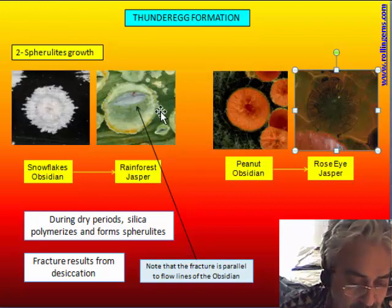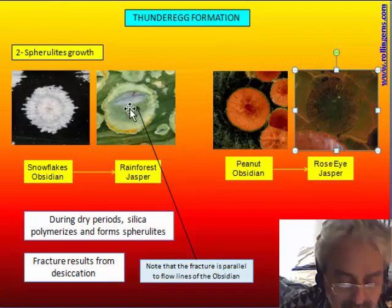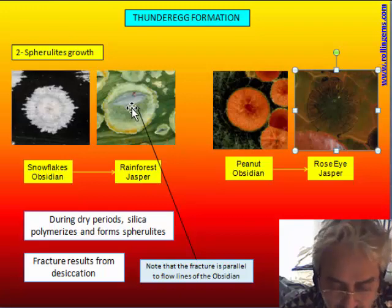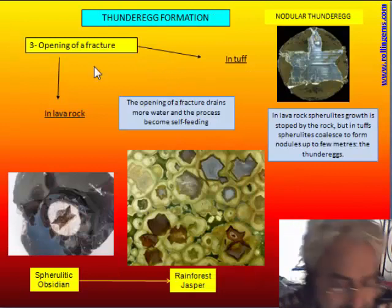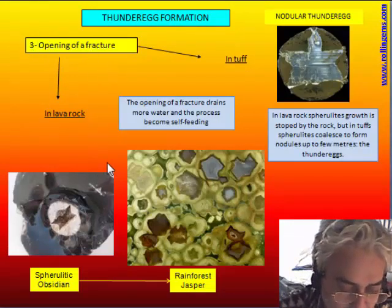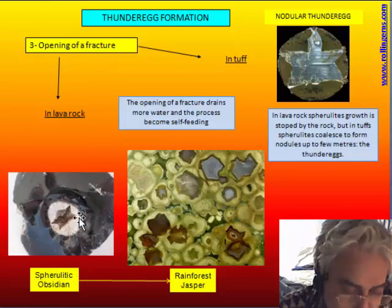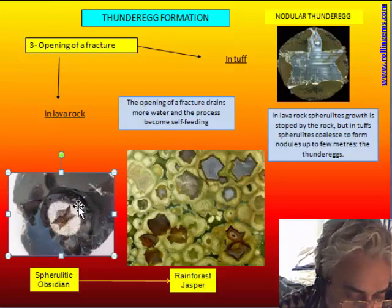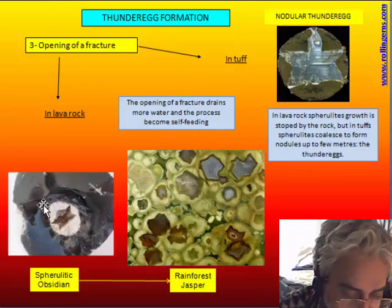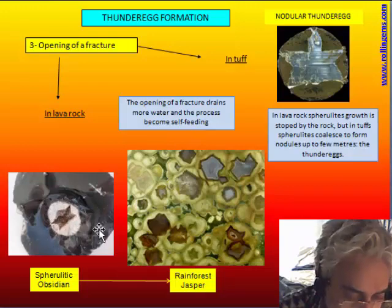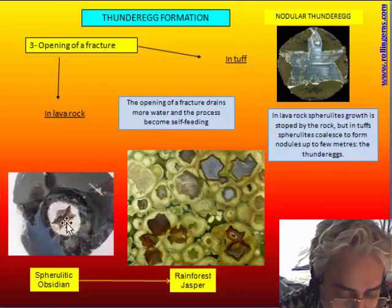The fracture begins to form at this moment — during the drying, the fracture appears because of the loss of volume. The last step is the opening of the fracture. When we are in obsidian, we can have a spherulitic obsidian or a jasper in a second stage, but the spherulite cannot grow because the surrounding rock is hard. So the growth is stopped and the fracture cannot migrate.